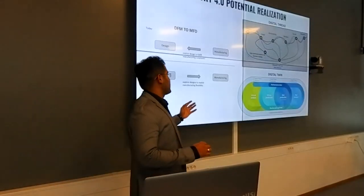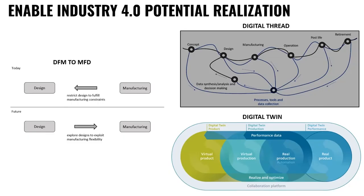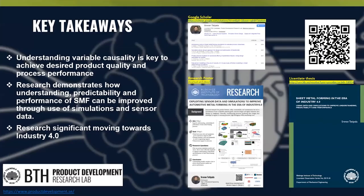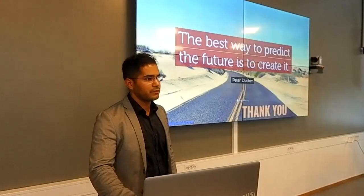This links well with the idea that in the past you used to restrict designs to meet manufacturing constraints, whereas today you're trying to explore new designs to explore the possibilities and flexibility of manufacturing. It links quite well with digital thread and digital twin concepts. You can find my research via that barcode, and I also have a poster if you have questions. Thank you.